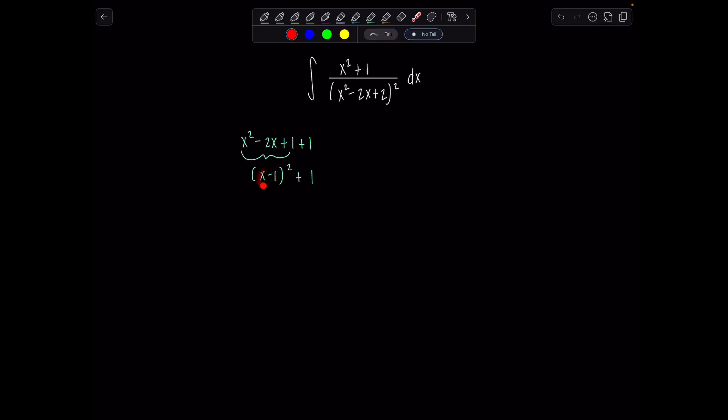So since we have a variable quantity squared plus a constant, then this calls for using a trig sub involving tangent. I'm going to let tangent theta equal x minus 1, the entire variable quantity that's being squared. Then we're going to differentiate both sides.